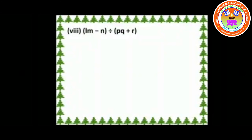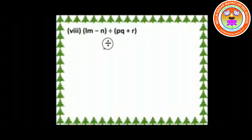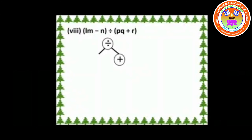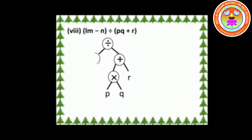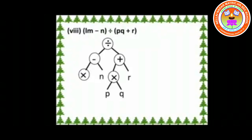Fourth one: LM − N ÷ (PQ + R). The symbol ÷ is the node and it has two terms. On the right side, the symbol plus is the node and its leaf is R. From the symbol plus, the symbol × is the branch whose leaves are P and Q. On the left side, the symbol − is the branch whose leaves are L and M.